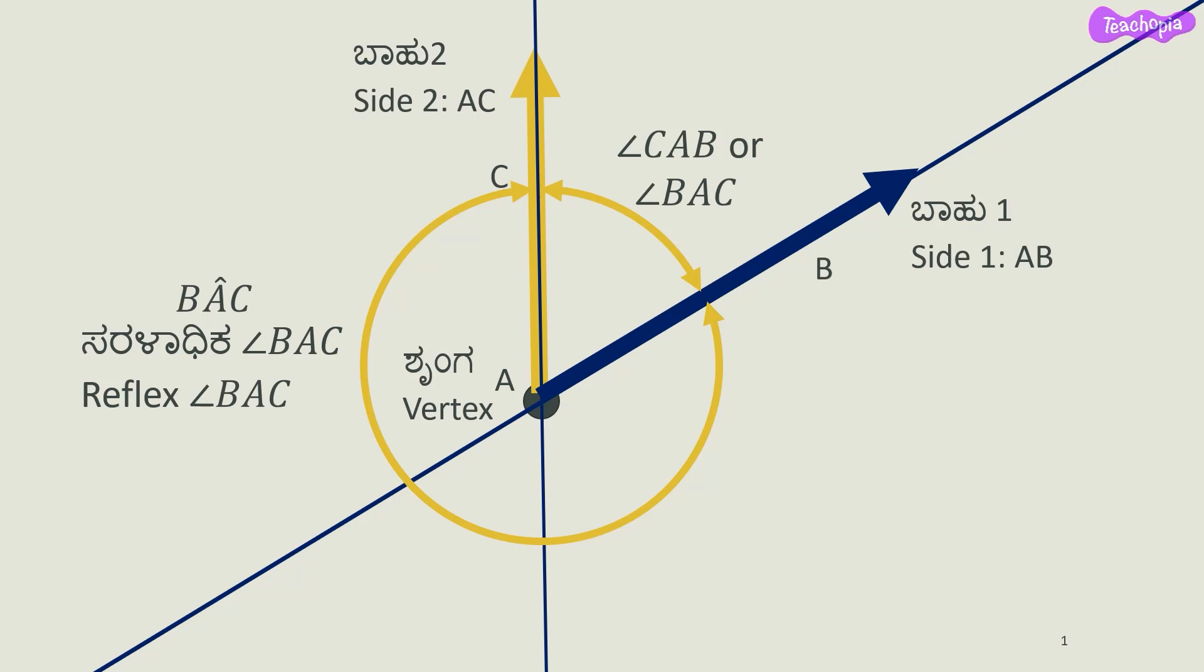The order of the sides is not very critical when we are naming the angles, but the vertex must be the middle letter in the name of the angle. In general, we can say that if we rotate ray AB about point A by angle CAB, we can get ray AB to overlap on ray AC.